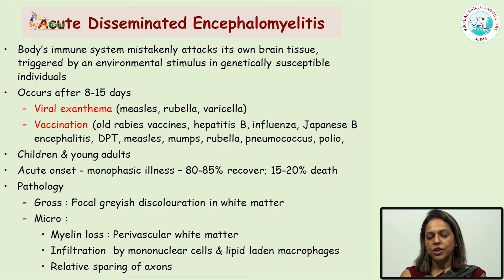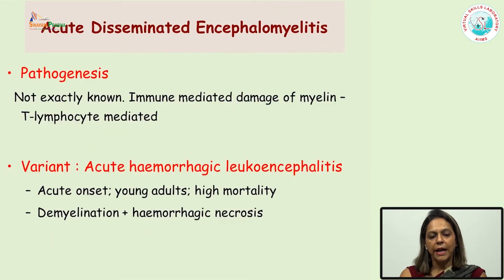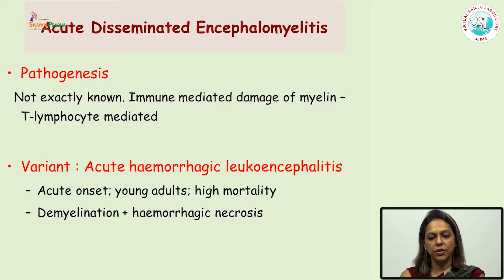Grossly, there is grayish discoloration in the white matter, which is mostly disseminated. Microscopically, the lesion starts in the perivascular white matter region, and there would be infiltration by mononuclear cells and macrophages, with relative sparing of axons. The exact pathogenesis of the disease is not known, but it has been thought that it is immune-mediated damage to the myelin by T lymphocytes. The variant of ADEM — acute hemorrhagic leukoencephalitis — is mostly acute in onset, also affects young children, but has a very high mortality, and in addition to demyelination, you can have hemorrhagic necrosis of the brain.